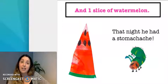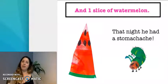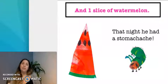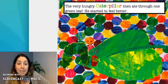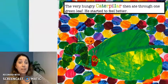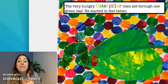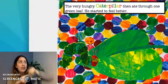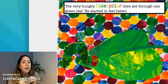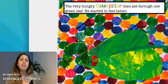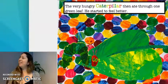And that night, he had a stomachache. Yes, he ate a lot of food. The very hungry caterpillar then ate through one green leaf. He ate the leaf. And he started to feel a little bit better.